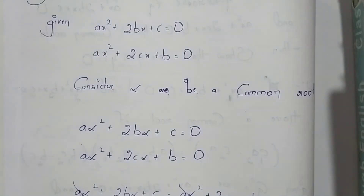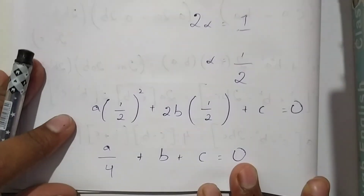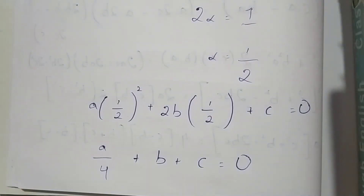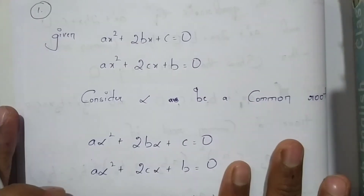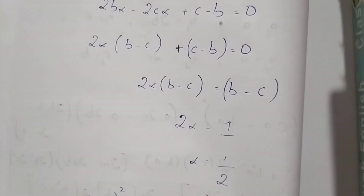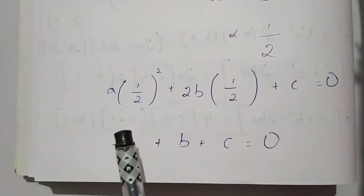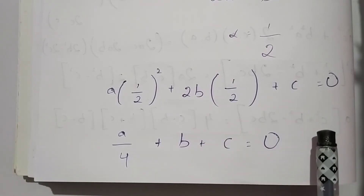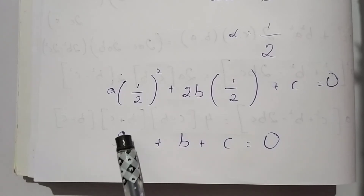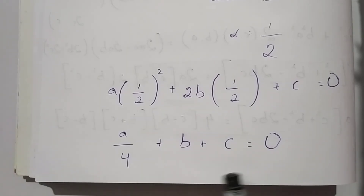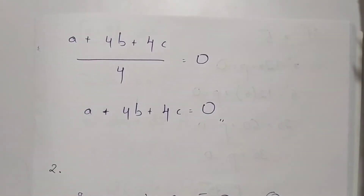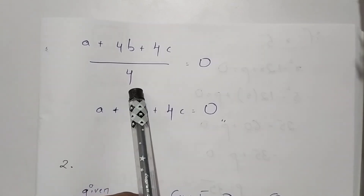On substituting the value of alpha = 1/2 into one of the equations, we get a·(1/2)² + 2b·(1/2) + c = 0. Since (1/2)² = 1/4, this becomes a/4 + b + c = 0. Taking 4 as common from all three terms gives (a + 4b + 4c)/4 = 0, and sending 4 to the right-hand side we get a + 4b + 4c = 0.